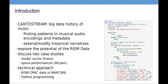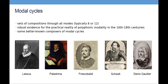My job is to explain the case of the modal cycles. What is a modal cycle? A modal cycle is a set of compositions through all the modes, typically eight or twelve modes, though other numbers are also used. They're important because they constitute robust evidence for the practical reality of polyphonic modality in the 16th to 18th century. Better known composers of modal cycles include Orlando de Lassus, Palestrina, Frescobaldi — around three — Samuel Scheidt, and Denis Gaultier with La Rhétorique des Dieux, a 12-mode cycle with some quirks.